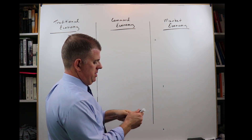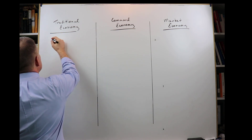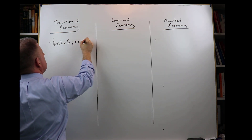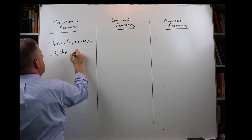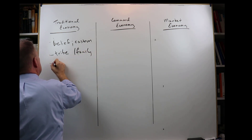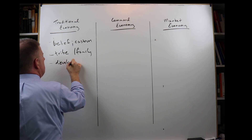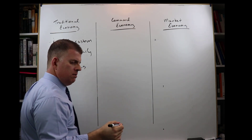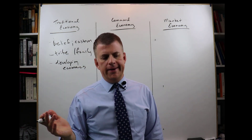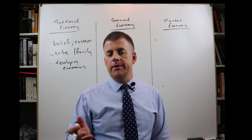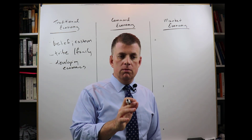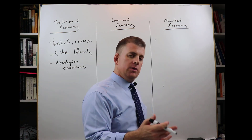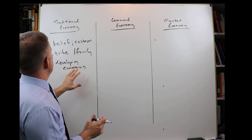A traditional economy is based in custom and belief, centered around tribe or family. You'll often find them now in developing countries, developing economies, if we find them at all. We're thinking of areas like aboriginal tribes in the rainforest or in the outback in Australia, or what had been in the U.S. — different Native American tribes and cultures, things like that. That's how the TEKS talks about it.